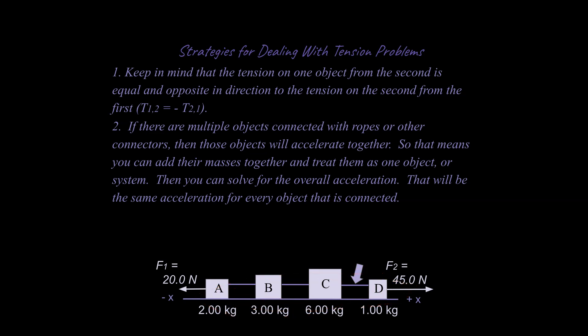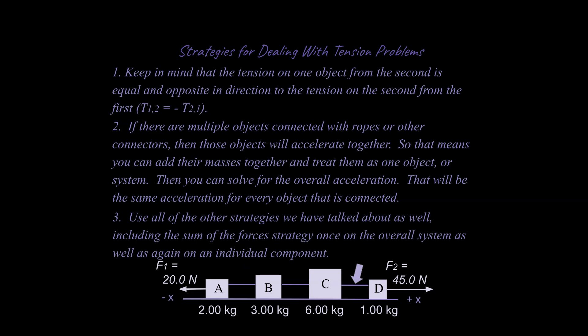We have four objects here and they are all going to accelerate together, as long as the strings are taut. We can exploit that because we can solve for the overall acceleration for the entire system, and that acceleration is equal to the acceleration for each of the individual components.